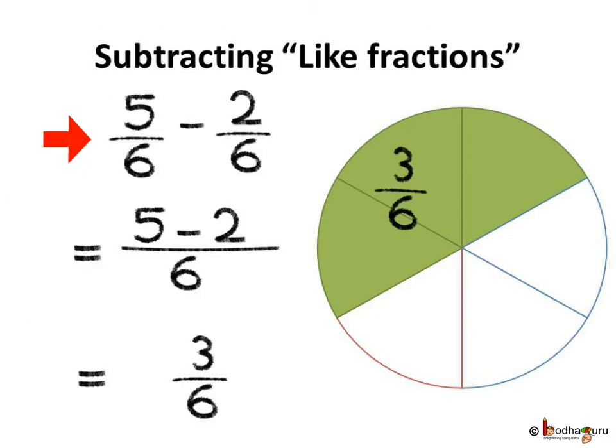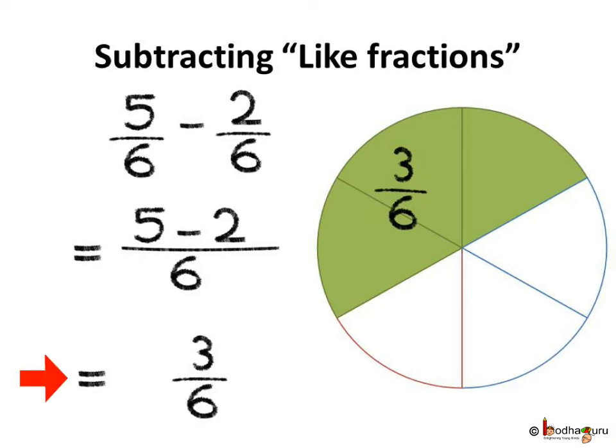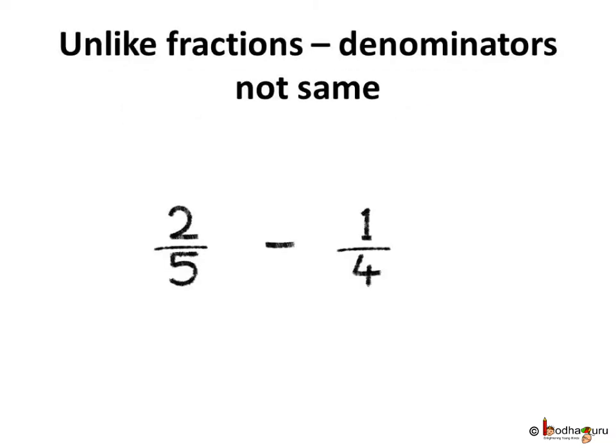Let us find out what is 5 by 6 minus 2 by 6. So, 5 by 6 minus 2 by 6 will be 5 minus 2 is equal to 3, and the denominator remains the same. So the answer is 3 by 6.